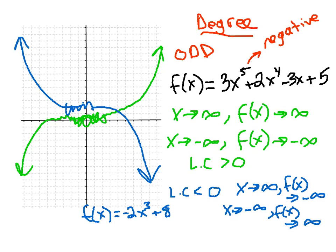To summarize: if you're asked to describe the end behavior of a polynomial function, find the degree of the polynomial. If the degree is even, both ends point in the same direction — determined by the leading coefficient (positive means up, negative means down). If the leading term is odd, the end behavior points in opposite directions. What determines which direction each end points is the leading coefficient.